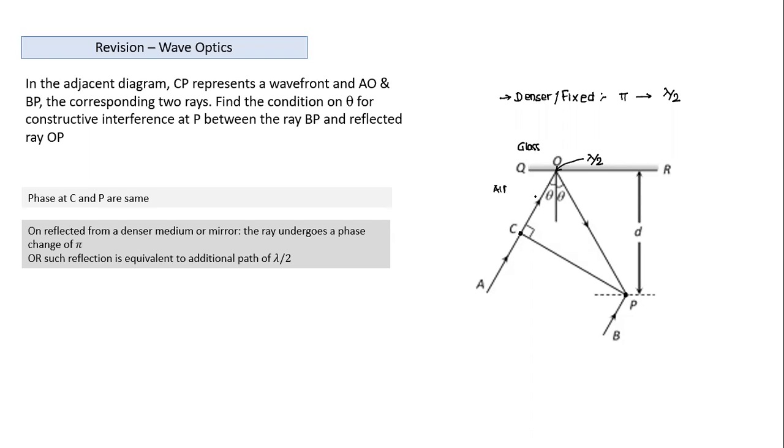But if we take the case if this entire thing is in glass and the reflection is happening from air, ray coming from glass getting reflected from air which is rarer medium, in that case there was no need to add. It will not undergo phase change and then there's no need to add lambda by two.